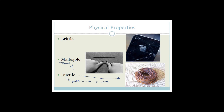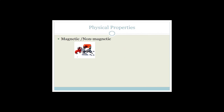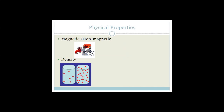There are a couple more physical properties you need to identify. Magnetic versus non-magnetic — that is one of your physical properties. Density is also a physical property. Density is defined as mass over volume. An easy way to think of it is how many parts there are in a given volume — how many parts of the substance are in the container.